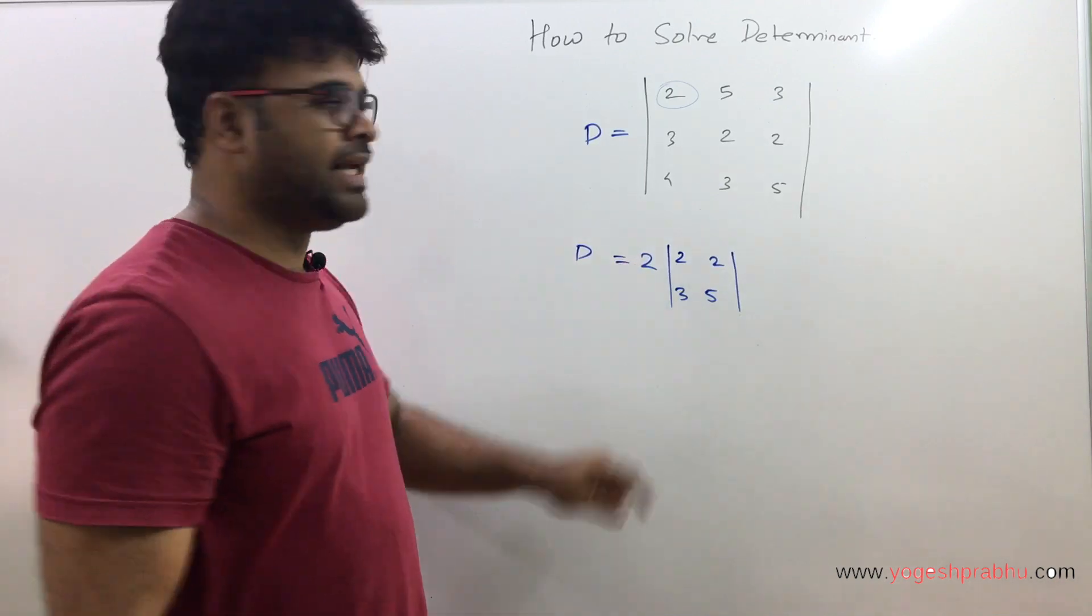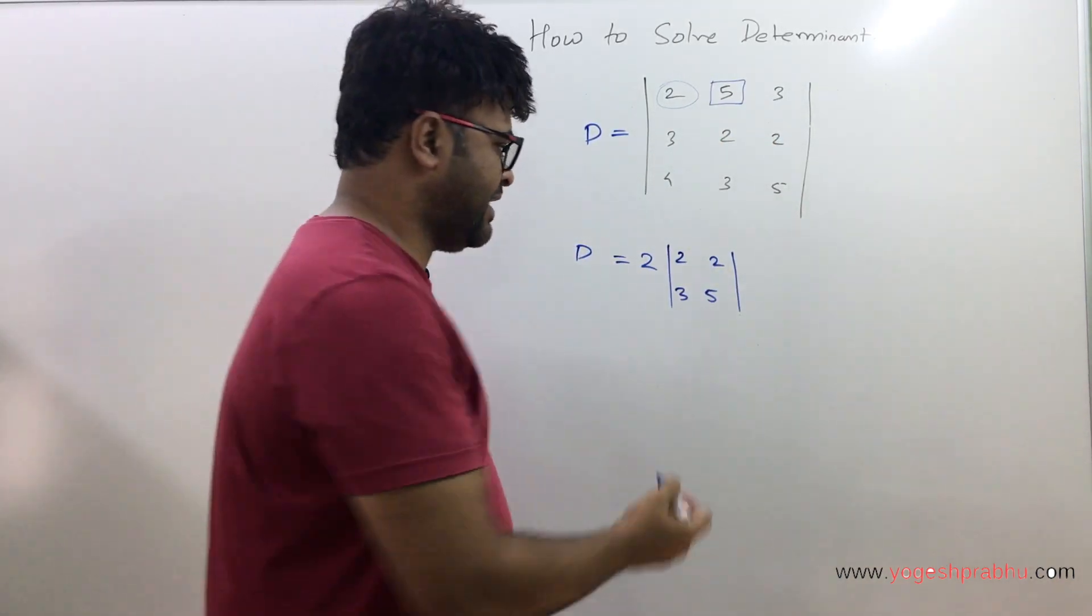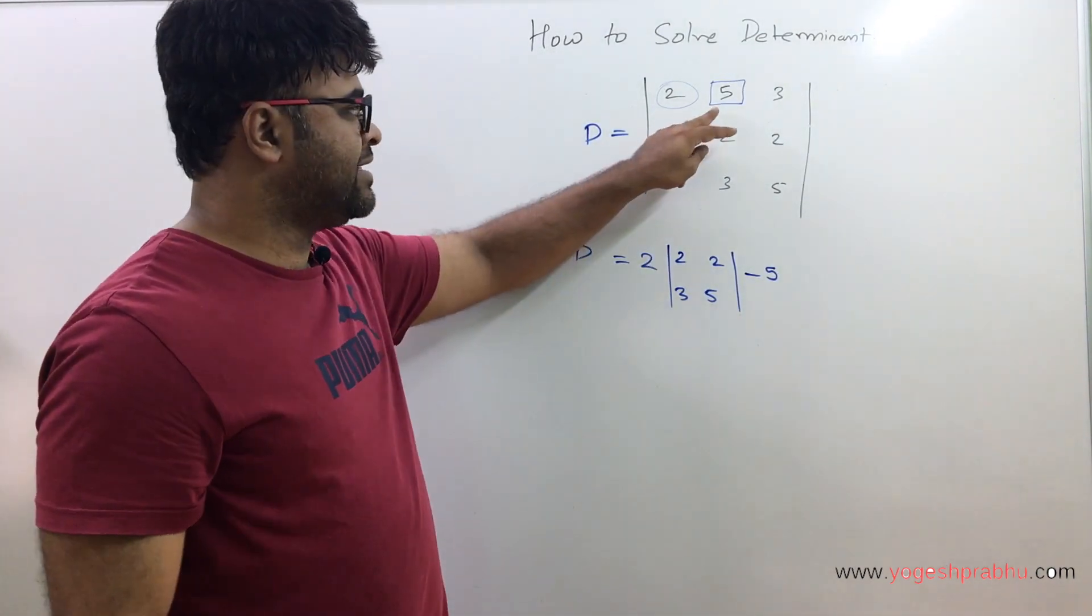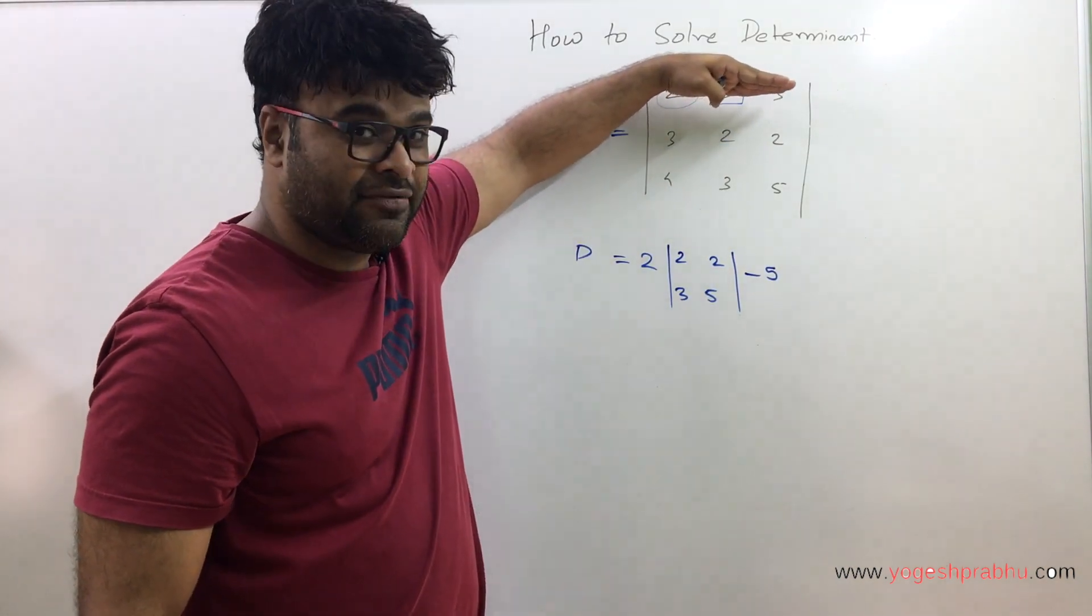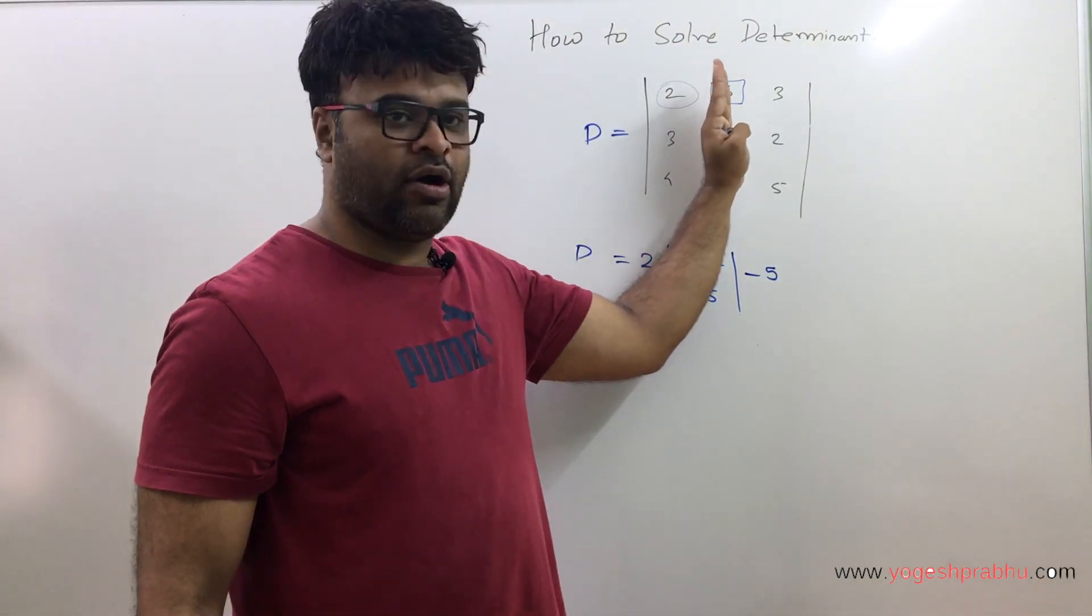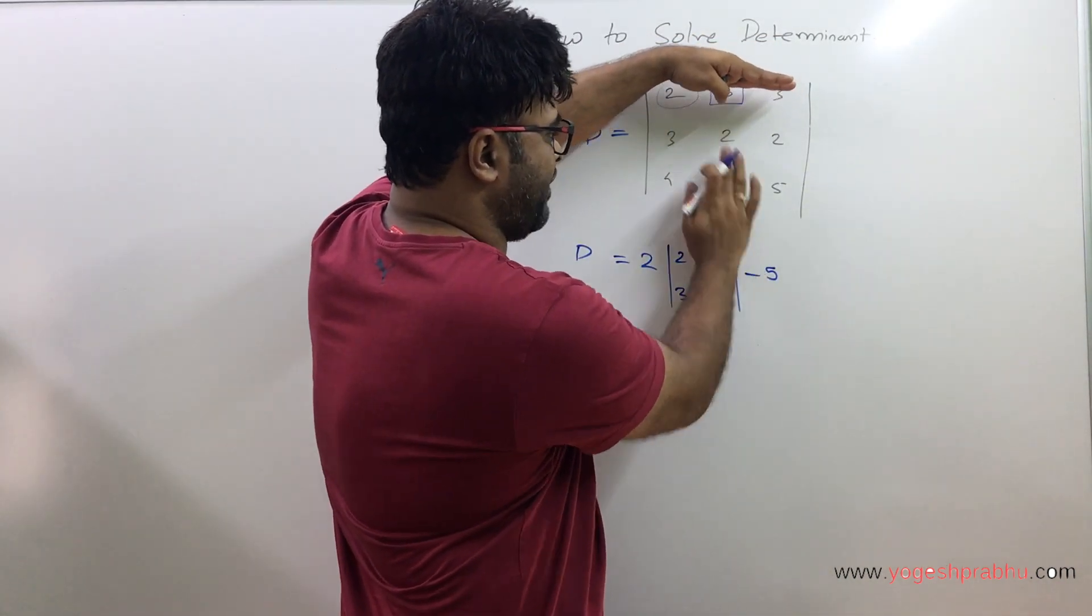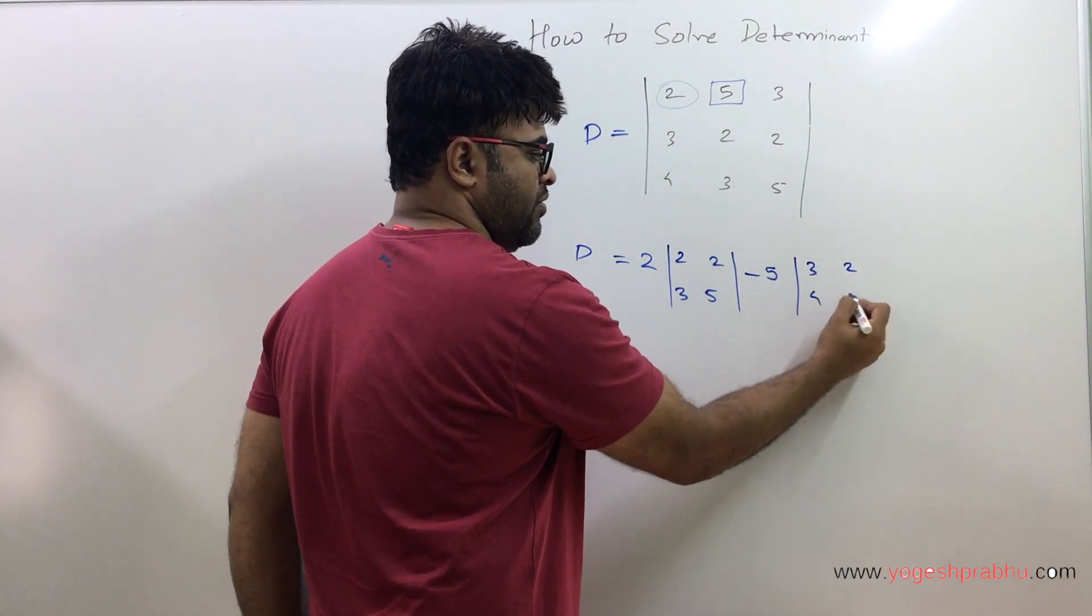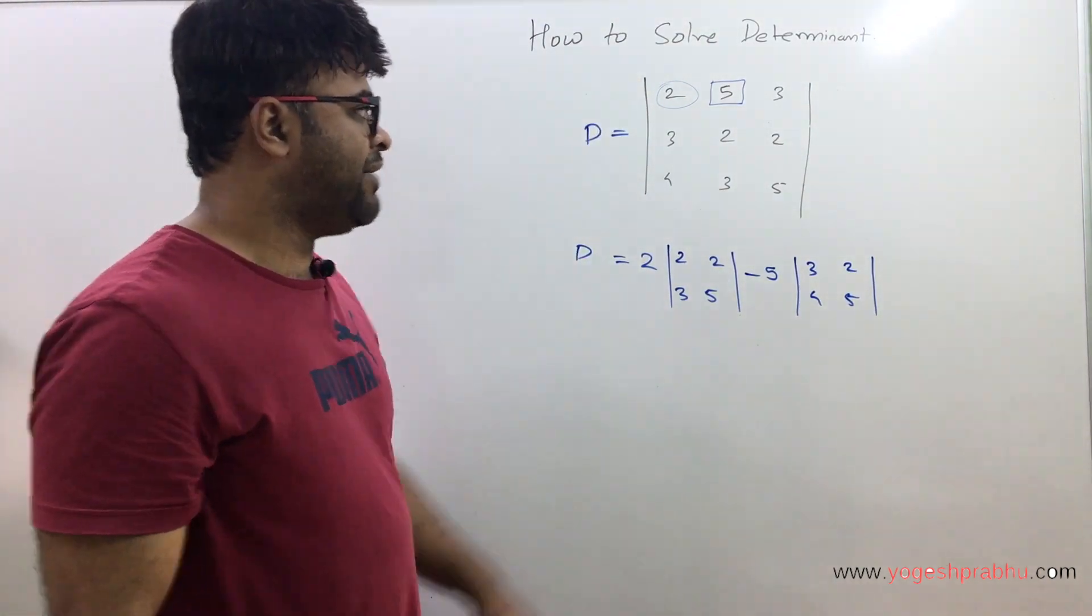Now after you take this number, the next number you will take is 5, but be careful you will take this as minus 5. Now with this element, you will hide the first row and hide the second column. When I hide the first row and second column, all I see is 3, 2, 4, 5 and I'll write that down. This is 3, 2, 4, 5.